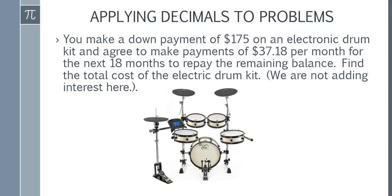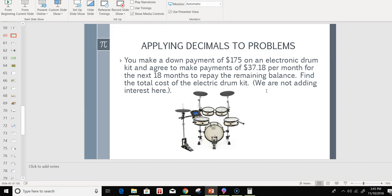In this case, if we go to our calculator, we know that we're making a payment of $175 and then $37.18 per 18 months.